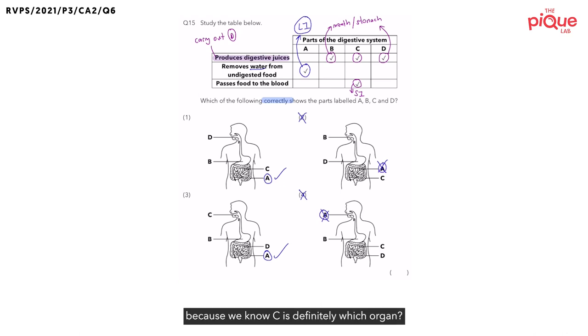Next, let's take a look at part C because we know C is definitely which organ? C is definitely the small intestine. So, let's check option one. Did they label C as the small intestine? Definitely. But what about option three? Did they label C as the small intestine? No.